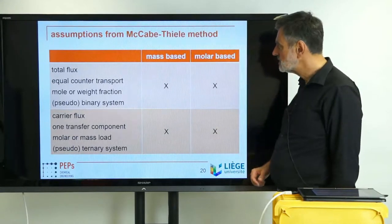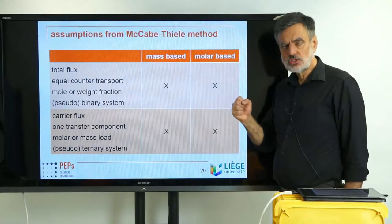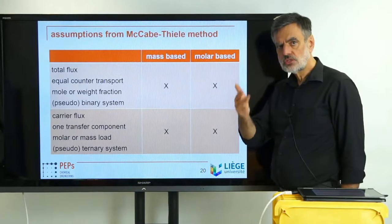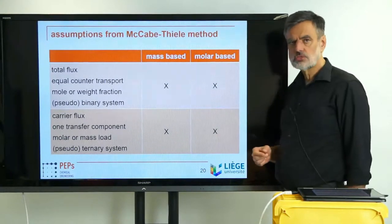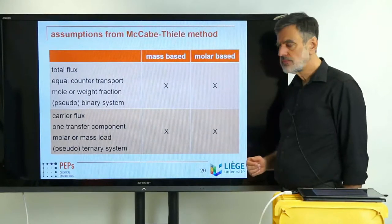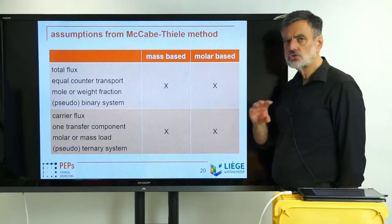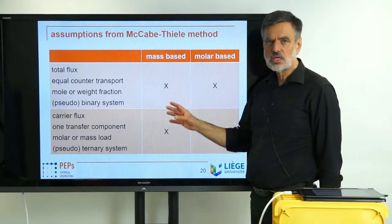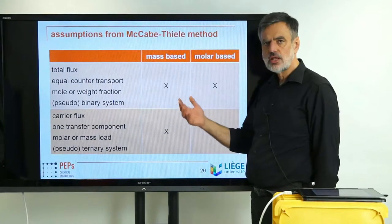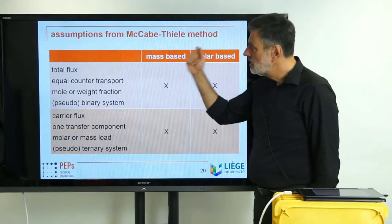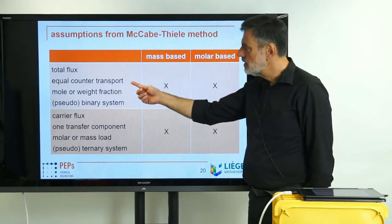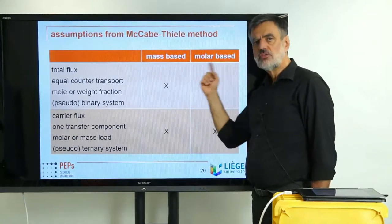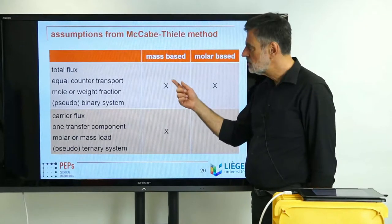We have two major options to apply the McCabe-Thiele method: on the one hand a mass-based way, and on the other a molar-based way. If you choose the mass-based way, then everything has to be on mass basis — the flow rates, the concentrations, as well as the equilibrium information. The same holds for the molar basis. You have to be consistent and not mix the two, because mixing them leads to incorrect results for the number of theoretical stages.